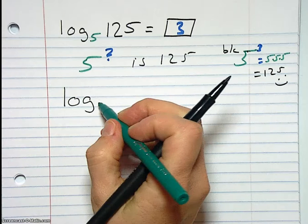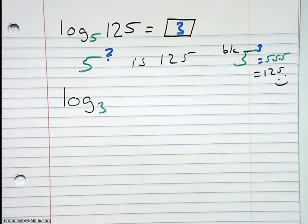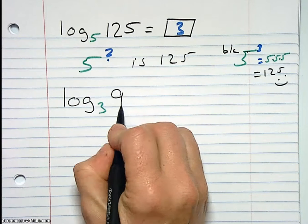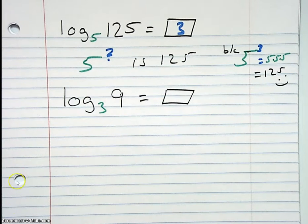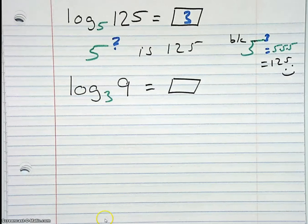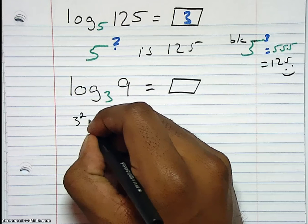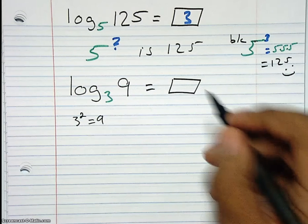Log, let's do base 3 this time of, let's just do something really basic, of 9. Log base 3 of 9, what is that? Since 3 squared is equal to 9, log base 3 is 2.